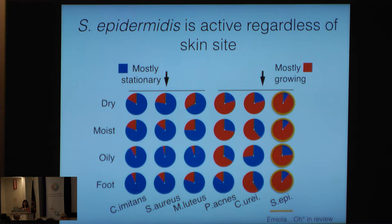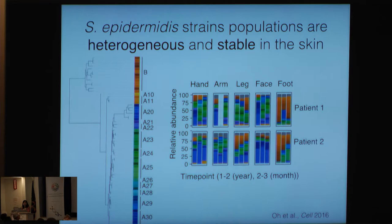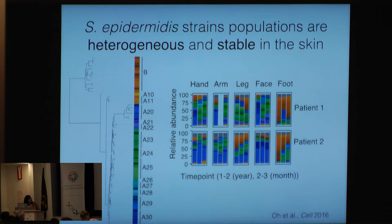Staph epidermidis seemed like a good candidate: it's active in most skin sites and grows relatively readily. But the challenge of using one's own microbes is that it also has to successfully compete against a lot of its own kind in the microbial community. Not just the Staph epidermidis species exists in the skin, but multiple different strains also exist. We've developed computational tools to reconstruct strain diversity in addition to species diversity. This relative abundance plot shows the different Staph epidermidis strains over a time series — time point one to two is about a year, time point two to three is about a month — showing that we have a lot of different strains in different skin sites, but they're pretty stable over time.